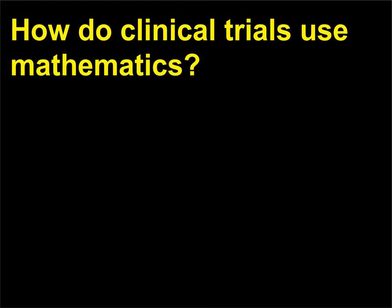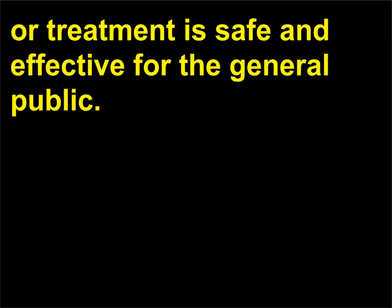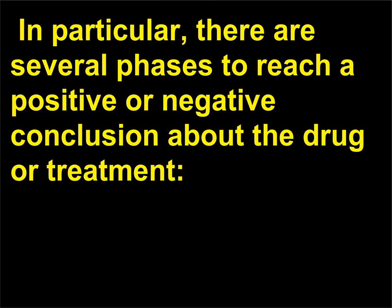How do clinical trials use mathematics? Clinical trials are used to determine whether a new drug or treatment is safe and effective for the general public. In particular, there are several phases to reach a positive or negative conclusion about the drug or treatment.